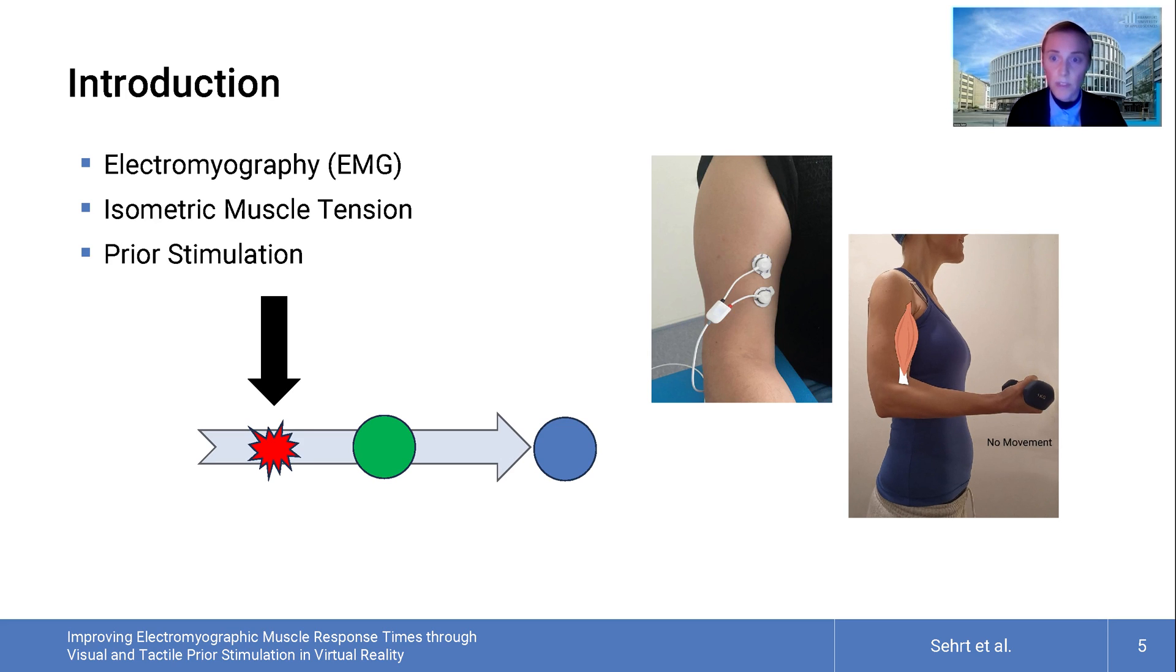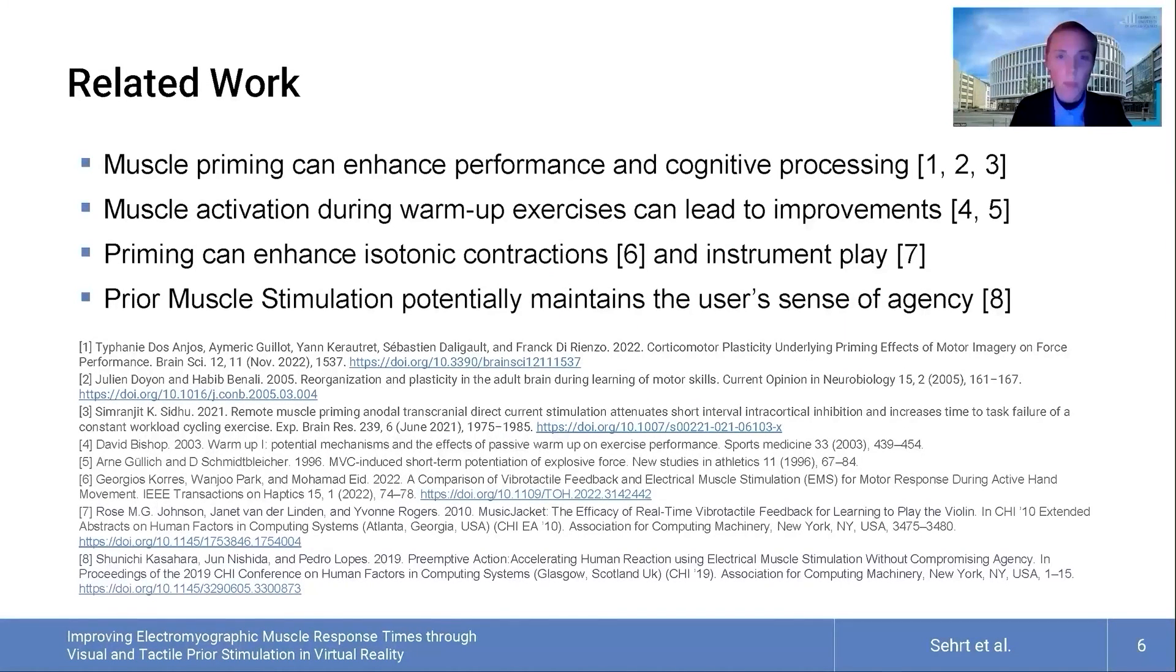Stimulation before interaction, known as prior stimulation, can help to localize and tense a muscle faster. Our goal was to probe whether a stimulation of the muscle location before and not during interaction would improve the response times during an EMG-based interaction task. The process of muscle priming, a phenomenon from physiology, suggests that prior stimulation of muscles can enhance performance in cognitive processing. Similarly, muscle activation during warm-up exercises can lead to improvements in various metrics.